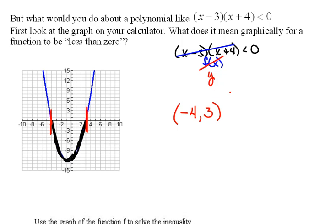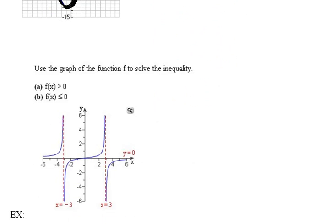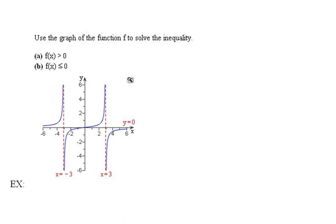What we're saying is that all x values between negative 4 and 3, but not including the endpoints, will have a y value less than 0 — they'll be below the x-axis. Let's try another example to further understand what's going on.